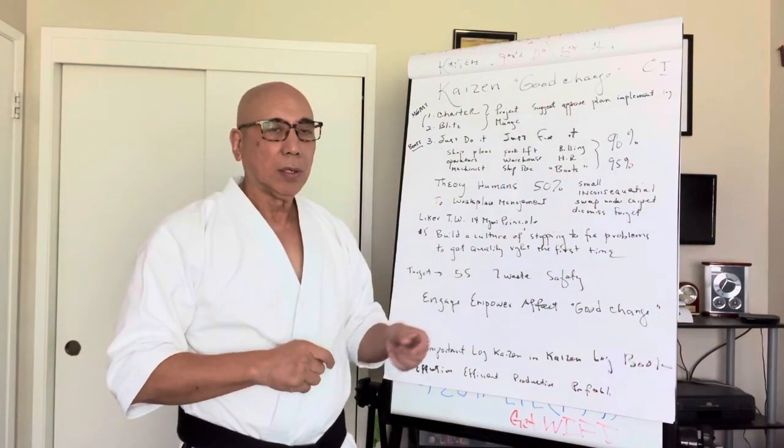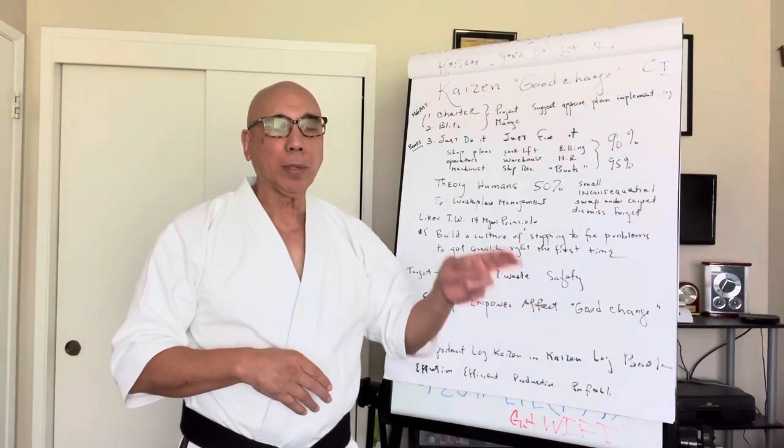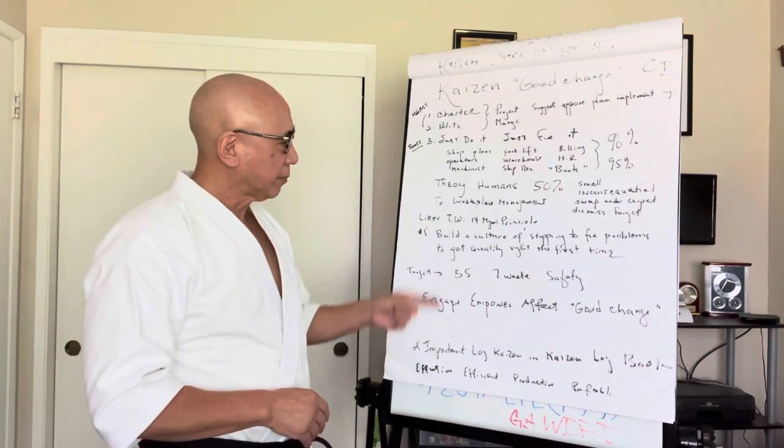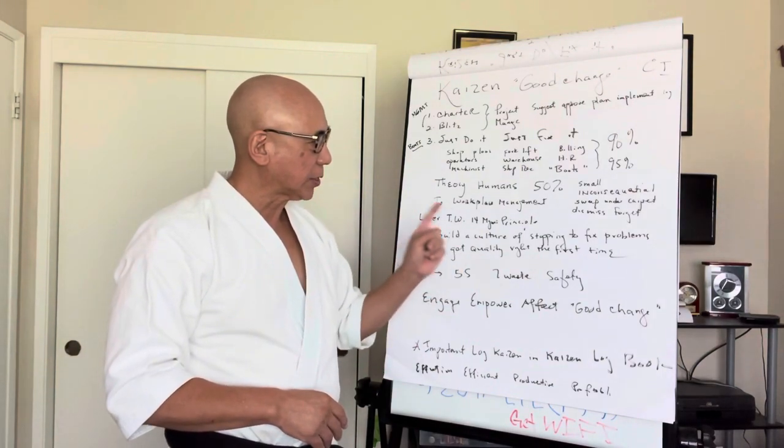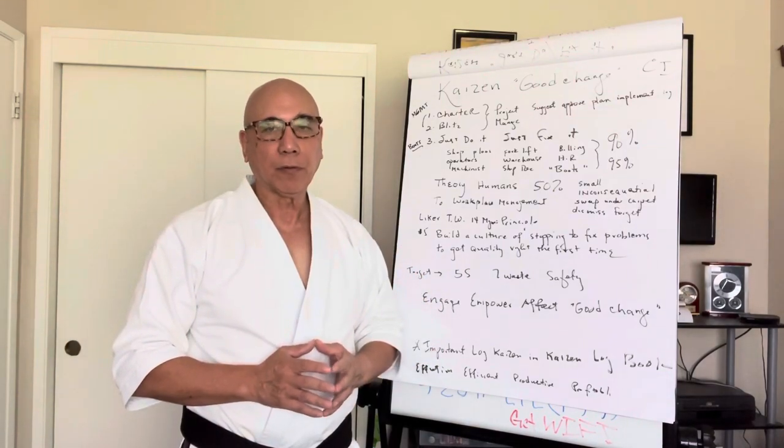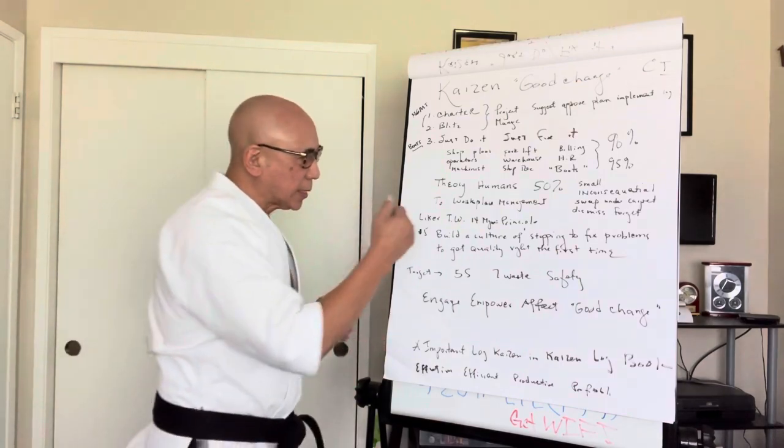Now, in Liker's book, The Toyota Way, 14 Management Principles, Number five states, build a culture of stopping to fix problems to get quality right the first time. So, that's kind of like telling you something.